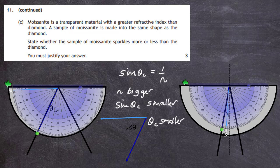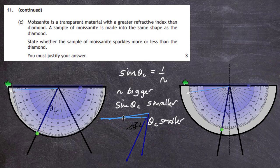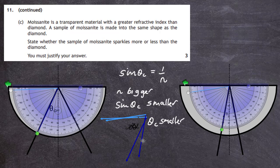Any angle from the critical angle up to 90 degrees has the possibility of total internal reflection in moissanite. Because the critical angle is smaller, there is a bigger range of angles that produce total internal reflection in moissanite compared to diamond. More angles enabling total internal reflection means more sparkle. Therefore, moissanite sparkles more than diamond.